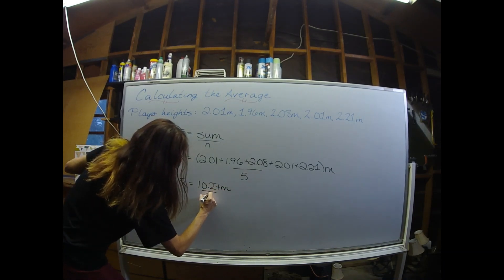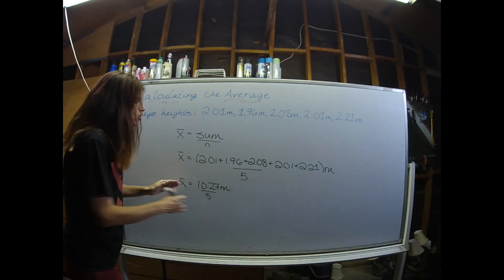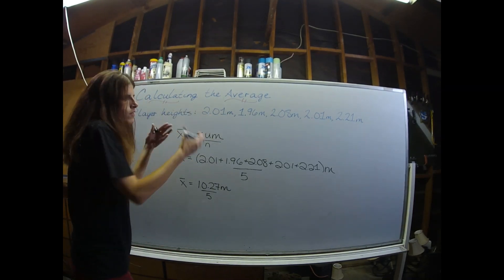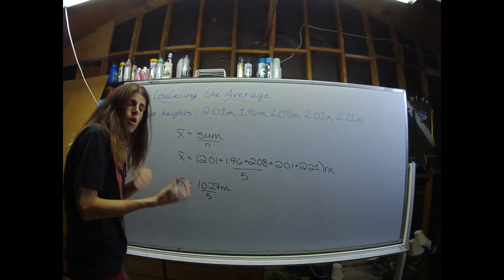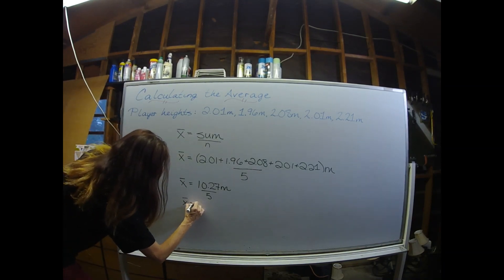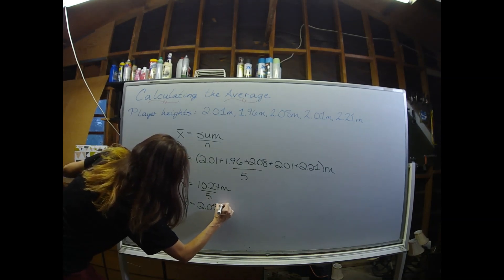A lot of times students will forget the division step. Remember that your average should be super comparable to the numbers that you were given. Since most of the players are around two meters, we would expect the average to also be around two meters. And indeed, after we divide by five, we get 2.054 meters.